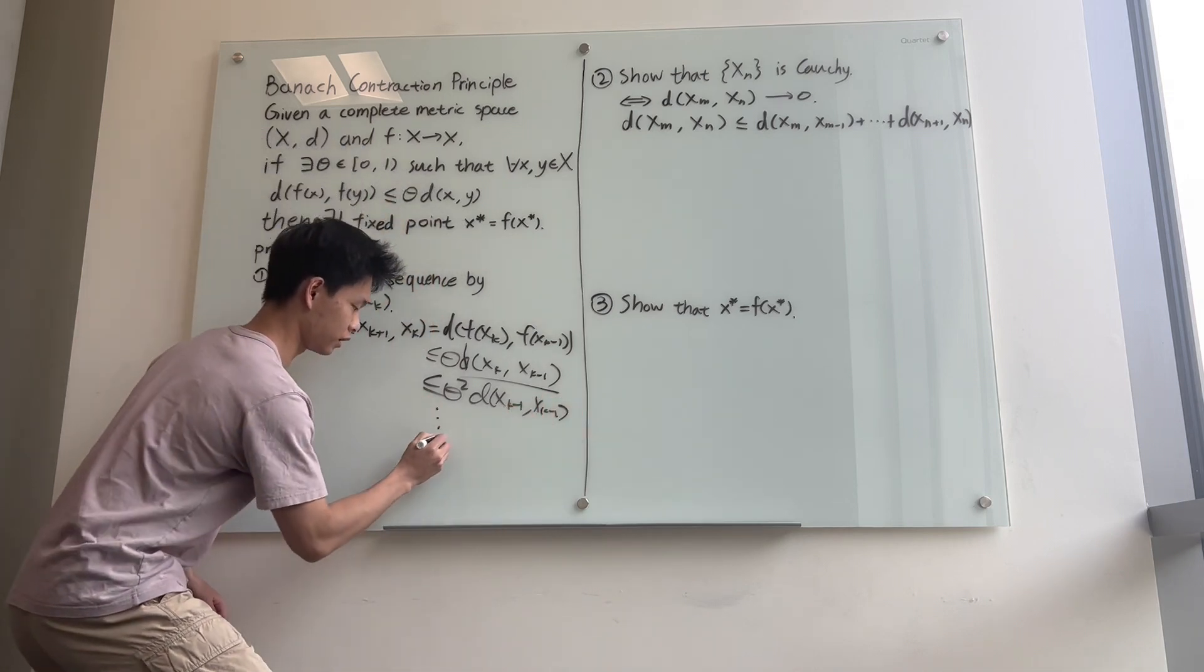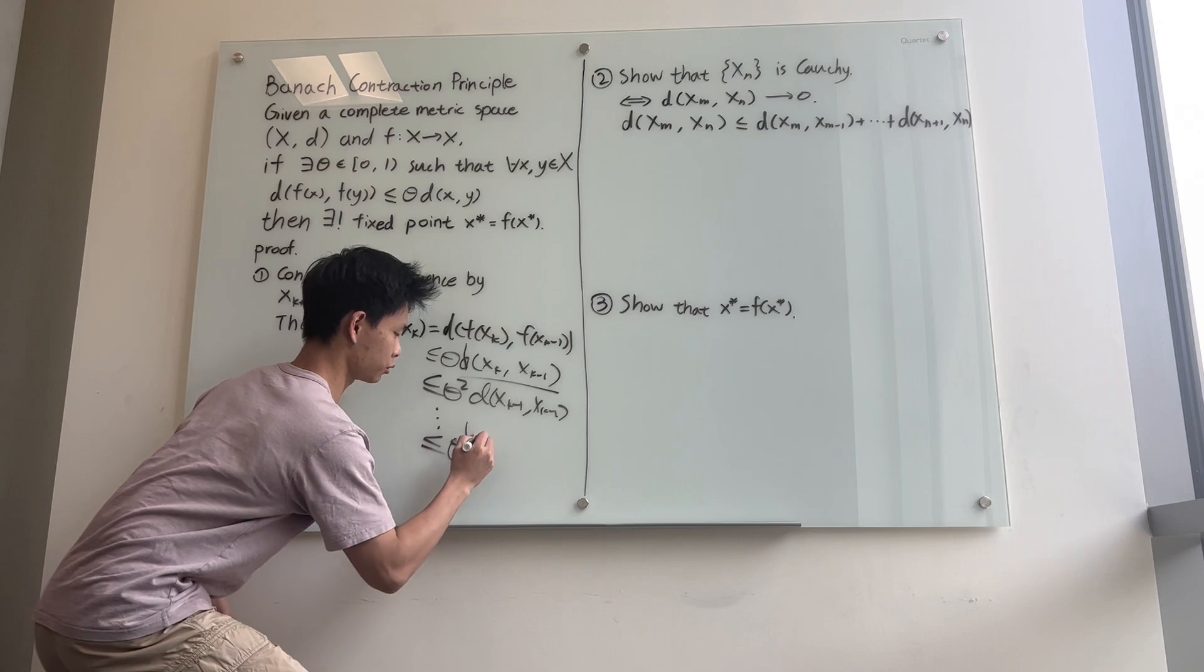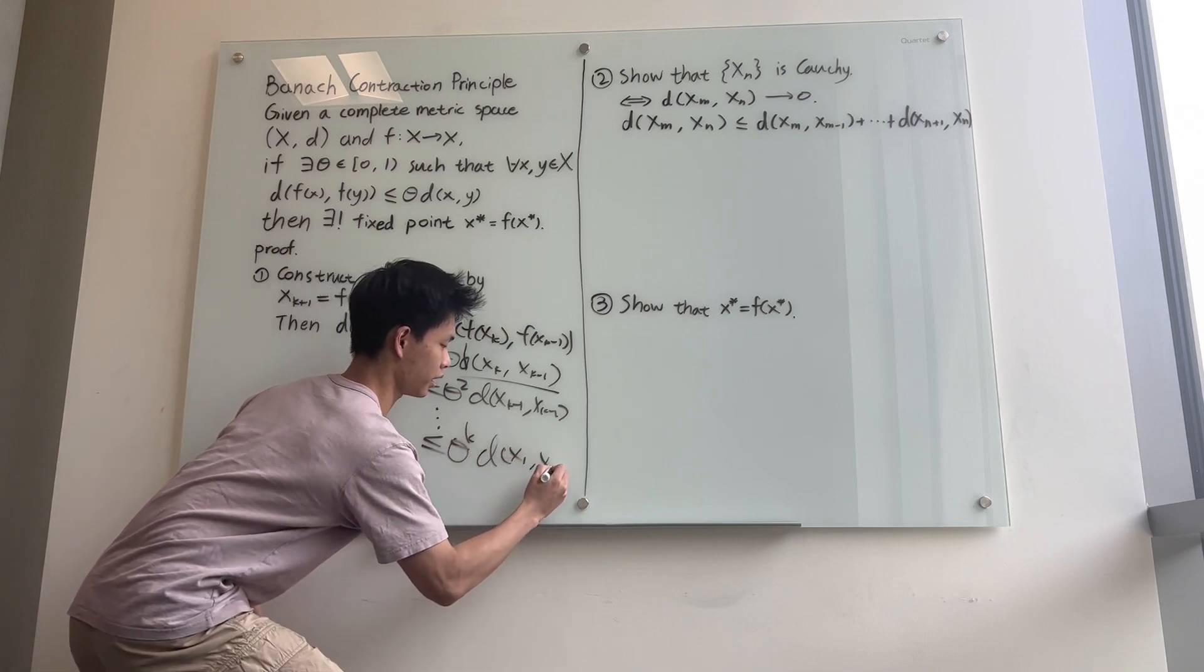And now we do this over and over again. Eventually we will get less than or equal to theta^k times d(x_1, x_0).